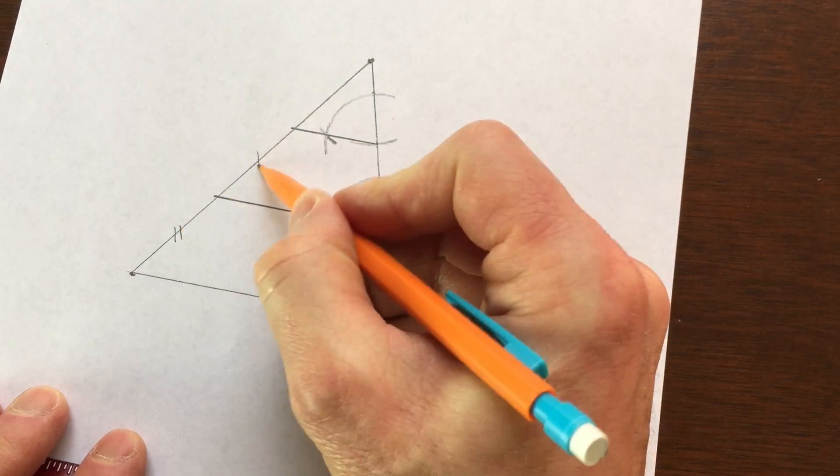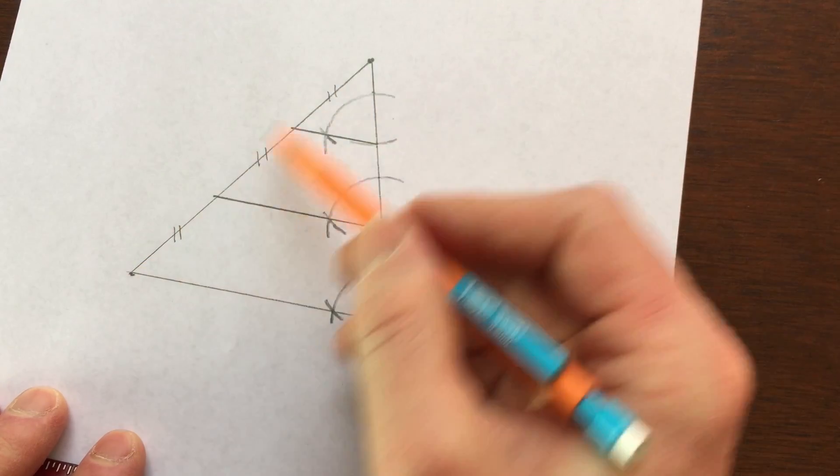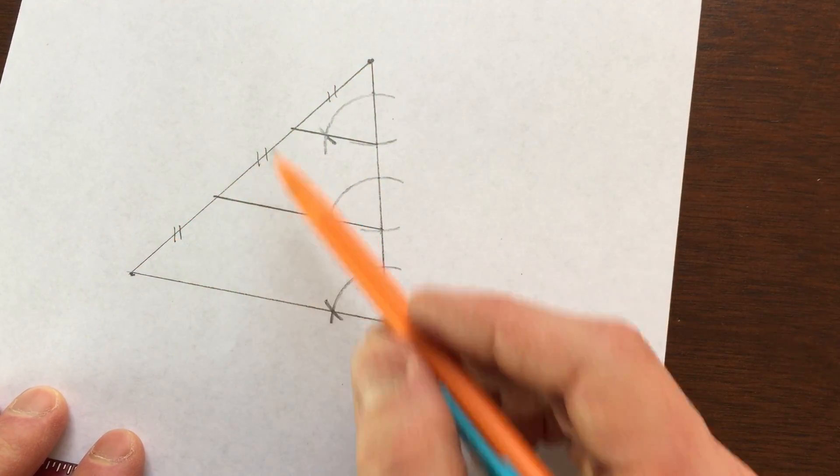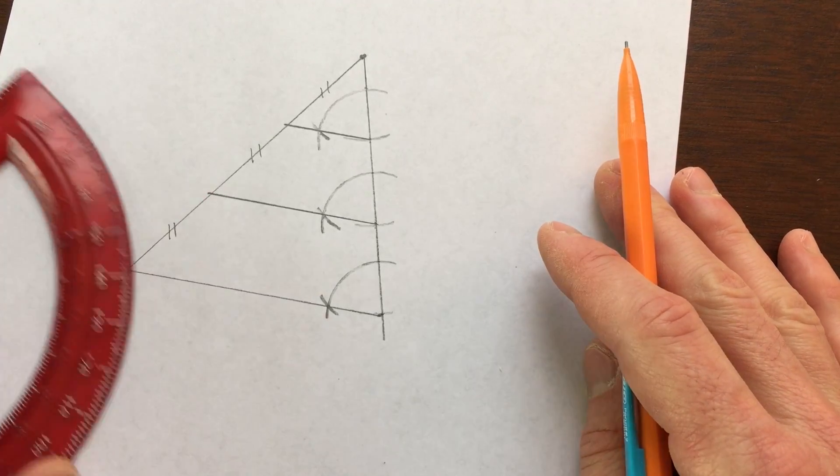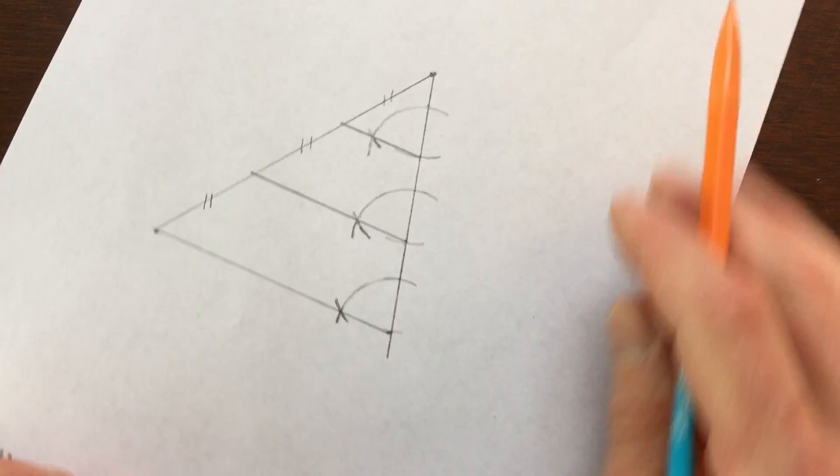So you can see now, this segment is congruent to this segment, it's congruent to this segment. That was our original segment that we were trying to subdivide into three pieces. So I hope this helped you understand how to subdivide a segment into congruent parts using constructions.